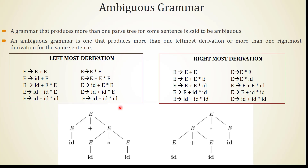Next is ambiguous grammar. A grammar that produces more than one parse tree for some sentence is said to be ambiguous. An ambiguous grammar is one that produces more than one leftmost derivation or more than one rightmost derivation for the same sentence. The example we discussed is a typical example of ambiguous grammar because it has more than one parse tree — the two trees are different but both derive the string id+id*id.